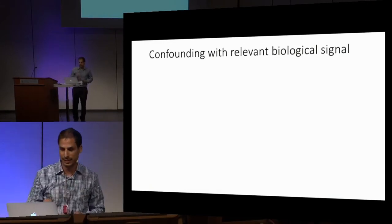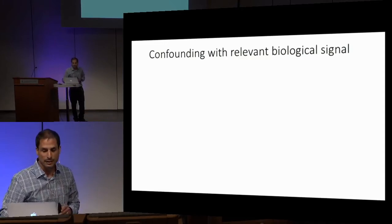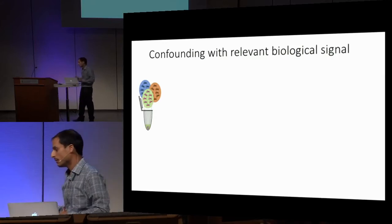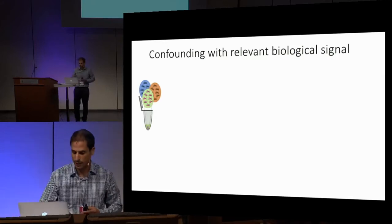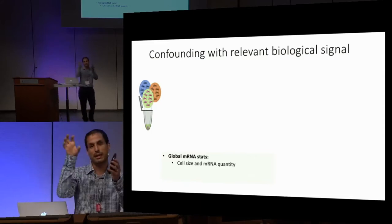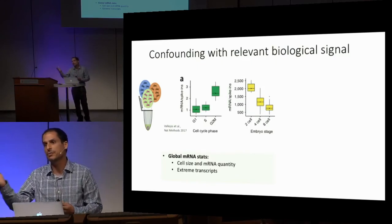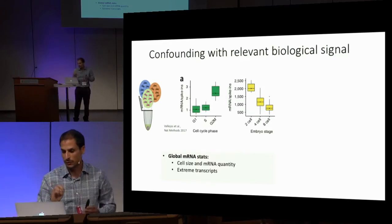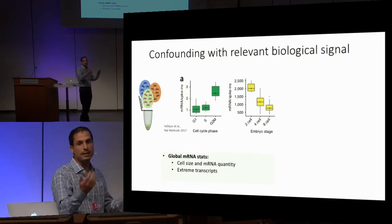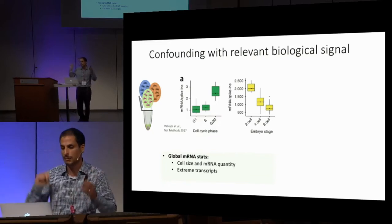To make this problem even harder, we cannot simply remove these confounding factors, because a lot of them are confounded with biology. A cell-intrinsic property that is important but which we don't want to normalize away is the size of the cell, which correlates with RNA content, with how many genes we can detect, and with how good the library will look.